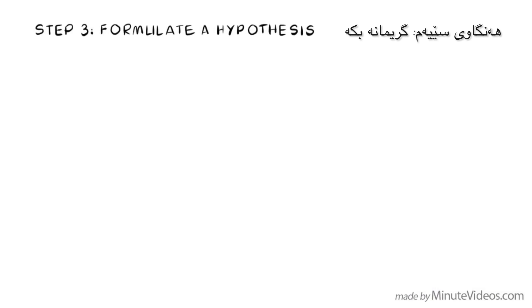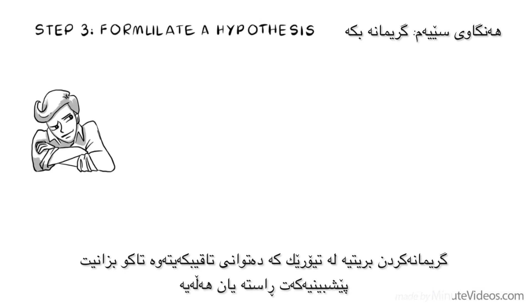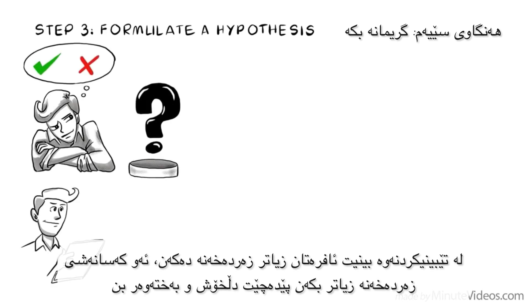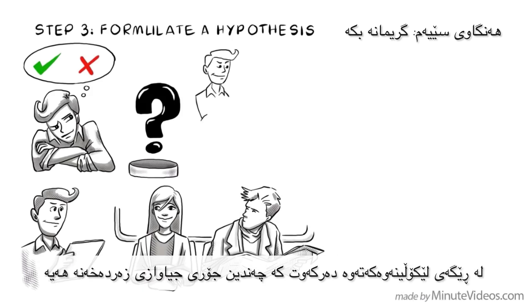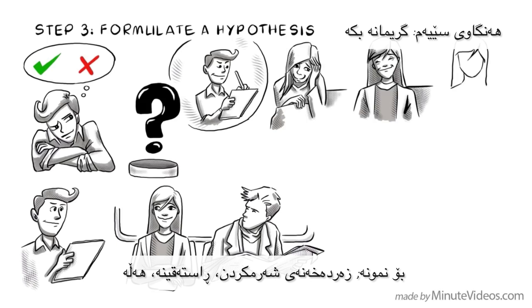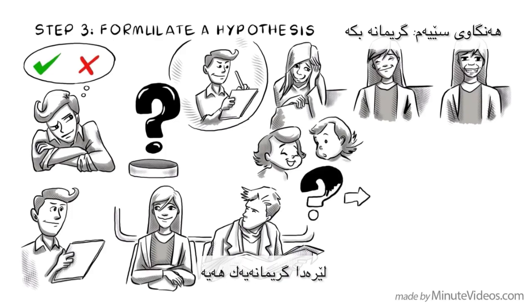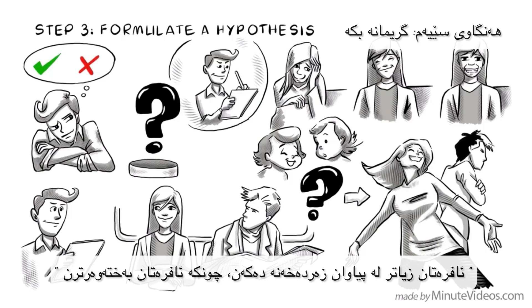Step 3: Formulate a hypothesis. A hypothesis is a theory that you can test to see if your prediction is right or wrong. From your observation, you noticed that women smile more often and that people who are smiling seem to be happy. From your research, you know that there are different types of smiles — shy, genuine, and false. In one paper, you read that baby girls smile more often than baby boys. Here is a hypothesis: women smile more than men because they are happier than men.